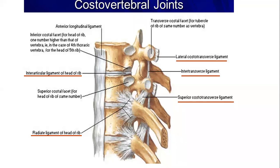The costotransverse joint is formed between the transverse process of the thoracic vertebra, which bears a facet for articulation with the articular part of the tubercle of the numerically corresponding rib. This joint also belongs to the synovial plane variety, and its ligaments include the costo-transverse ligaments, which have lateral and superior parts.